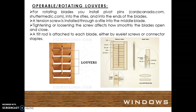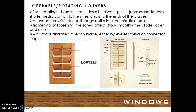Operable or rotating louvers. For rotating blades, you install pivot pins into the stiles, as we can see here in this image. The pivot pins are installed into the stiles and into the ends of the blades. A tension screw is installed through a stile into the middle blade. Tightening or loosening the screw affects how smoothly the blades open and close.